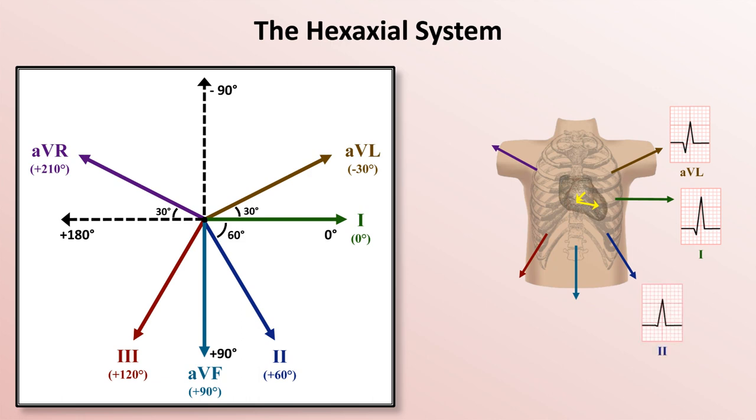When it comes to lead two, the lead is nearly perpendicular to the first depolarization vector, therefore there is negligible initial deflection. The second depolarization vector makes a similar angle to 2 as it did with AVL, therefore the later positive deflection in lead two is similar in amplitude as that in AVL.